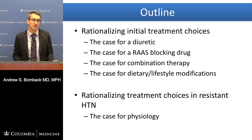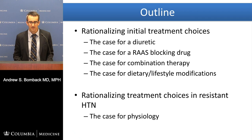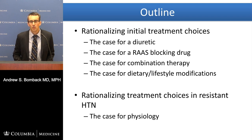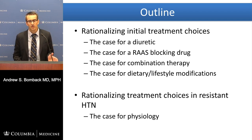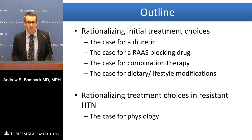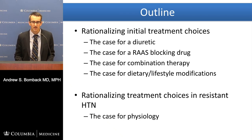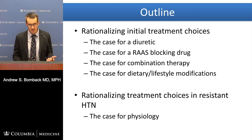We'll talk about what's the case for starting with a diuretic, what's the case for starting with a renin-angiotensin-aldosterone system blocking drug, what's the case for combination therapy right off the bat, and what's the case for using dietary and lifestyle modifications. We'll leverage that in terms of how you might use those decision-making processes later on in the natural history of hypertension when facing a patient with resistant hypertension. It's all based on the physiology we think is driving hypertension.